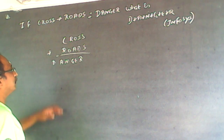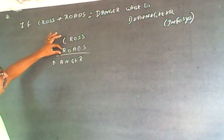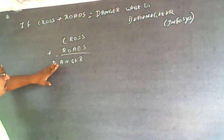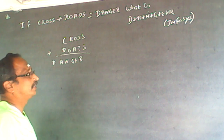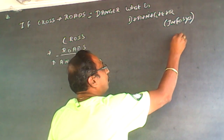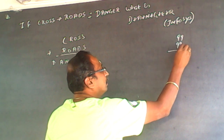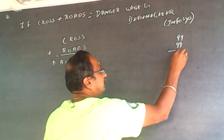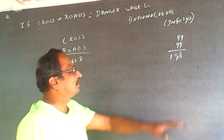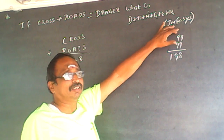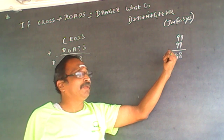Now what happens is: I have a five-digit number plus a five-digit number giving a six-digit number, so here D is separate. When we add the two largest five-digit numbers, like 99 plus 99 — nine plus nine is eight carry one — whenever I add two numbers, the maximum carry can only be one.